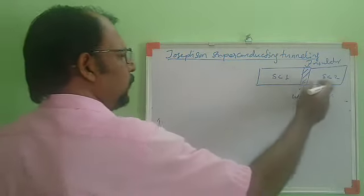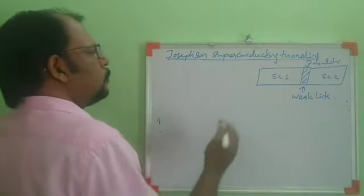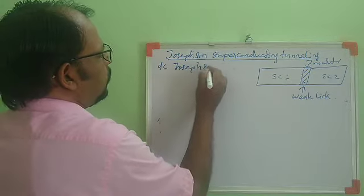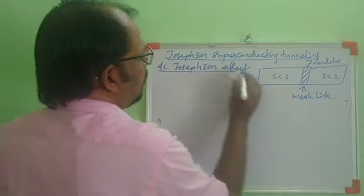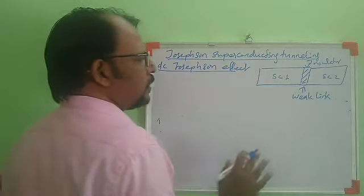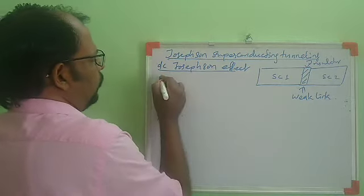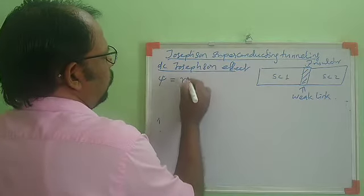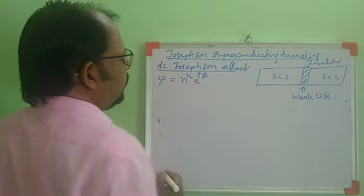In the absence of any electric or magnetic field, we can have a tunneling current between these two superconductors. The direction of current depends on the phase difference between the electron pairs in these two superconductors. That effect is called the DC Josephson effect — a DC current flows between the superconductors even in the absence of any electric or magnetic field.